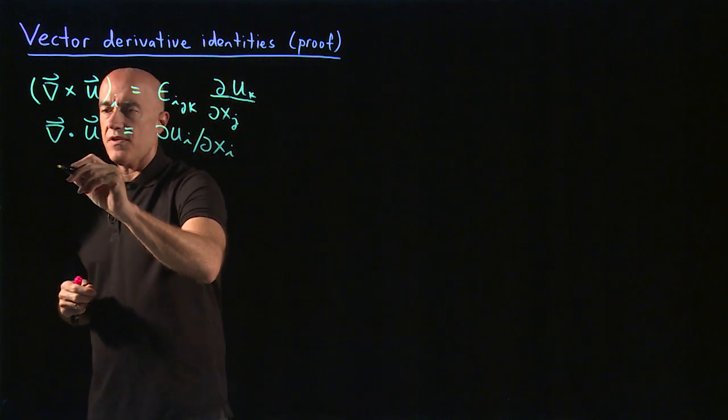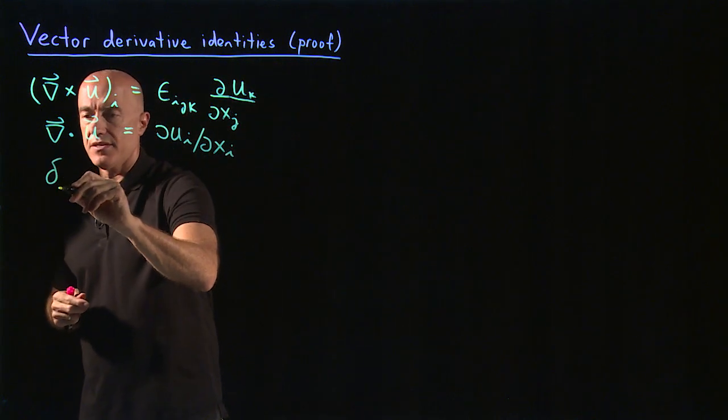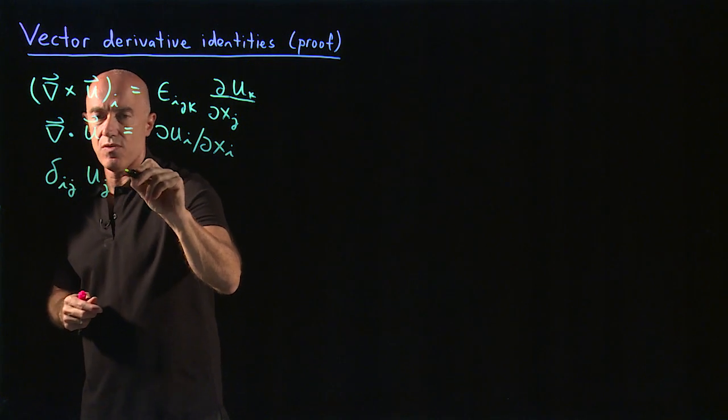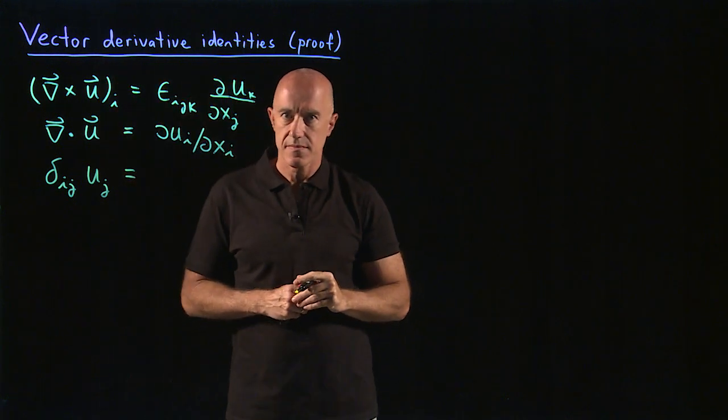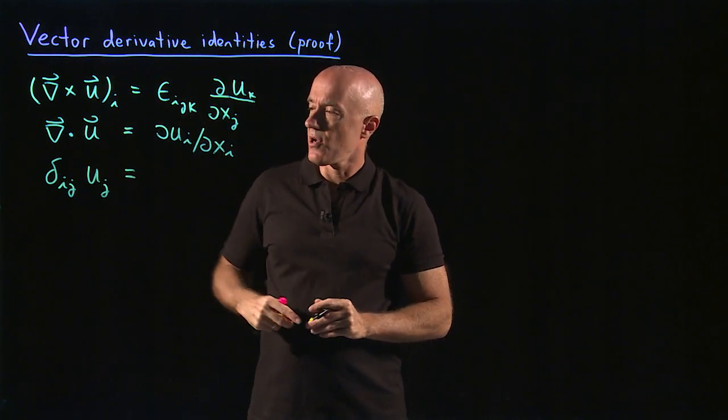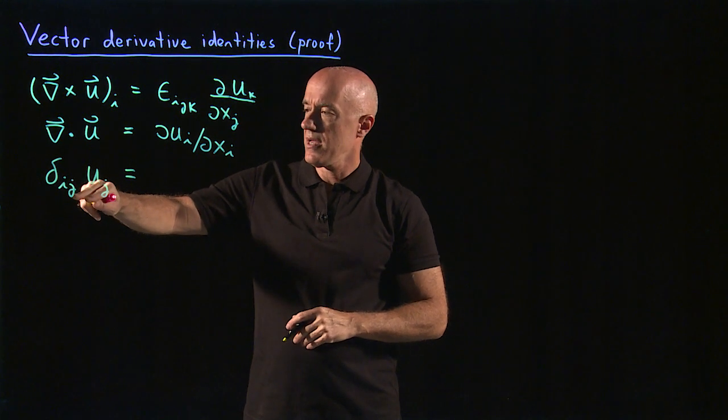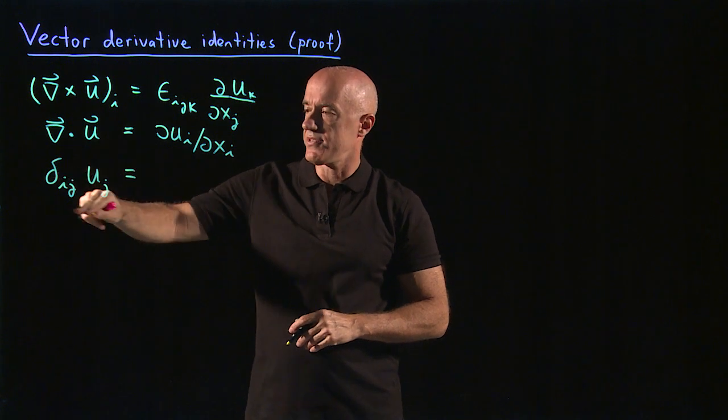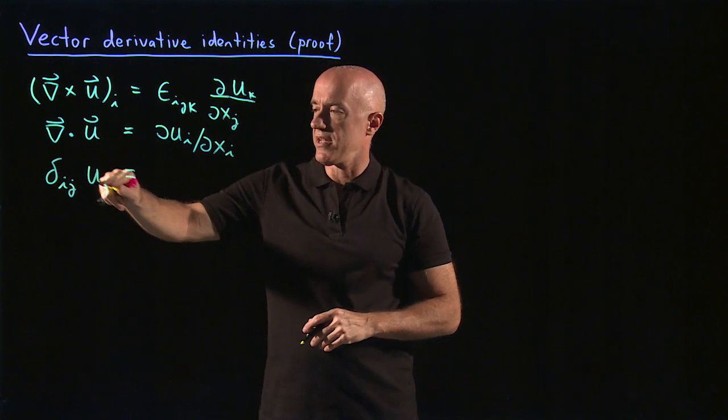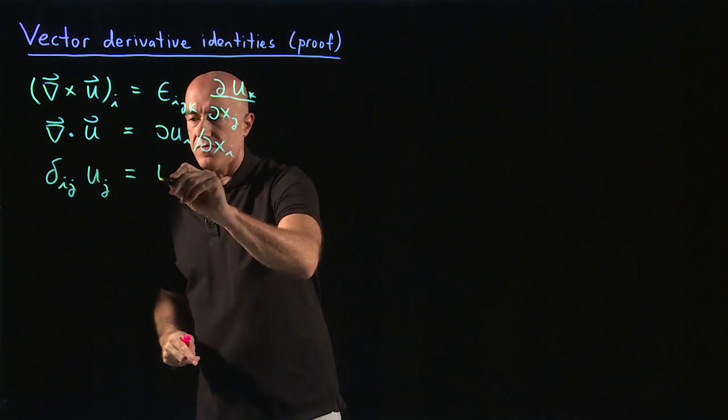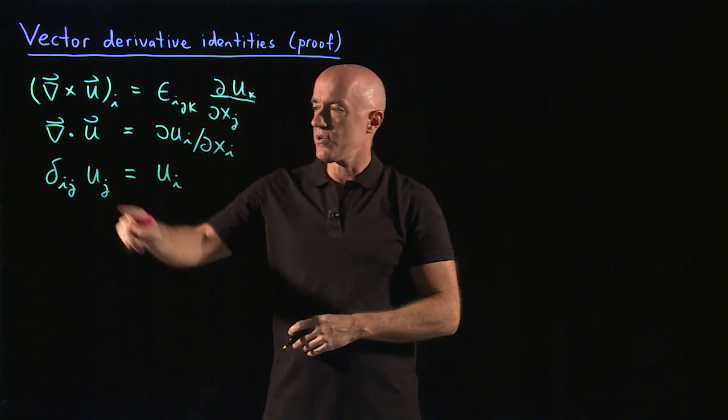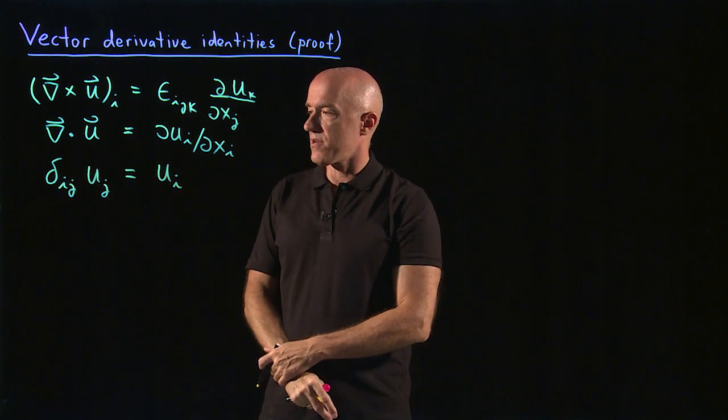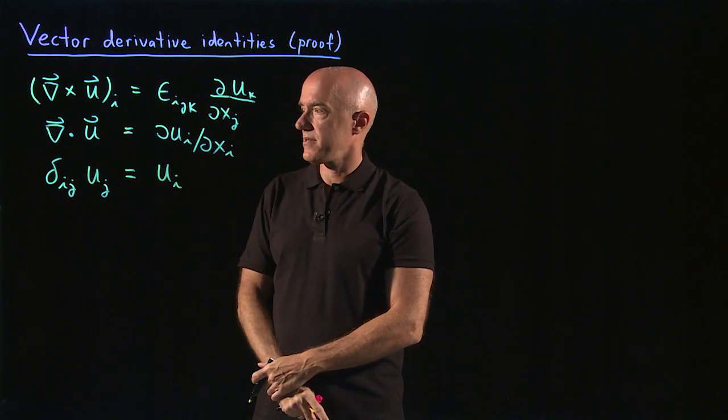What else do we use? Well, if we have the Kronecker delta, delta_ij times u_j, what would that be equal to? Summing over j. So delta_ij is 0 unless j is equal to i. So three terms here in the sum, all of them are 0 unless j equals i. And then this would be u_i. So when you contract a Kronecker delta with a vector, then you pick out the component corresponding to the index.